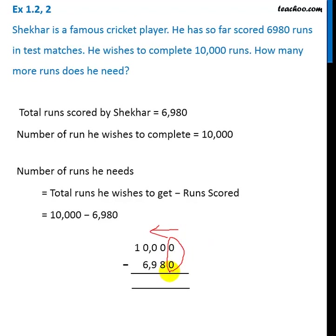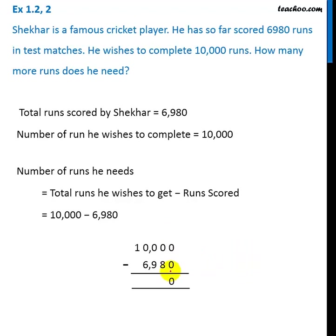Here it is zero and zero, so this becomes zero minus zero, that is zero. The next digit is zero and eight. Now for zero minus eight, that is not possible because zero is smaller than eight. So it will ask help from the next digit, but the next digit is itself zero, so it is broke — it cannot help.